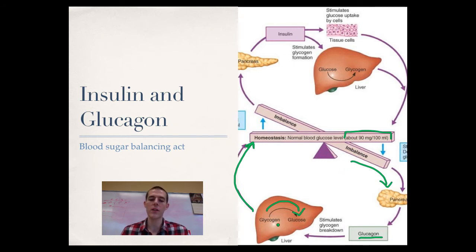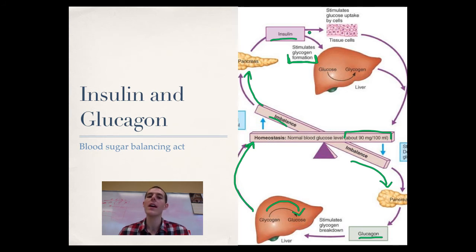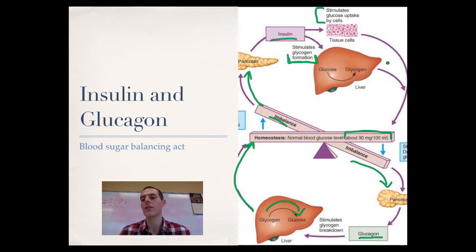In the opposite direction, if blood sugar is too high, the pancreas releases insulin instead. Insulin stimulates glycogen formation — storage of glucose in the liver as glycogen — pulling glucose out of the bloodstream. It also stimulates almost all cells in the body to take in glucose. Through the combination of cells picking up glucose and the liver making glycogen, blood sugar is lowered, restoring homeostasis and shutting off the pathway.